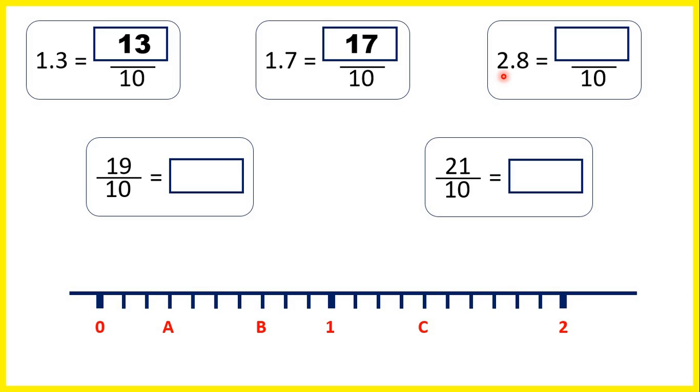And now 2.8 means we have 2 wholes and 8 tenths, but we can change our 2 wholes into tenths. Each whole is 10 tenths. So if we've got 2 wholes, that's 20 tenths, plus another 8 tenths means we have 28 tenths altogether.